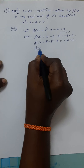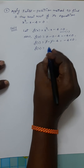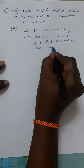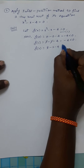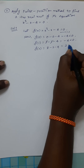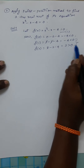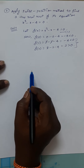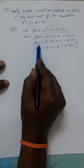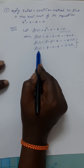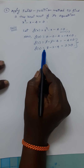Calculate f(2). So 2³ = 8; 8 - 2 - 4 = 2, which is positive. From these two observations, we conclude that the required root of the given equation lies between 1 and 2, according to the intermediate value theorem.